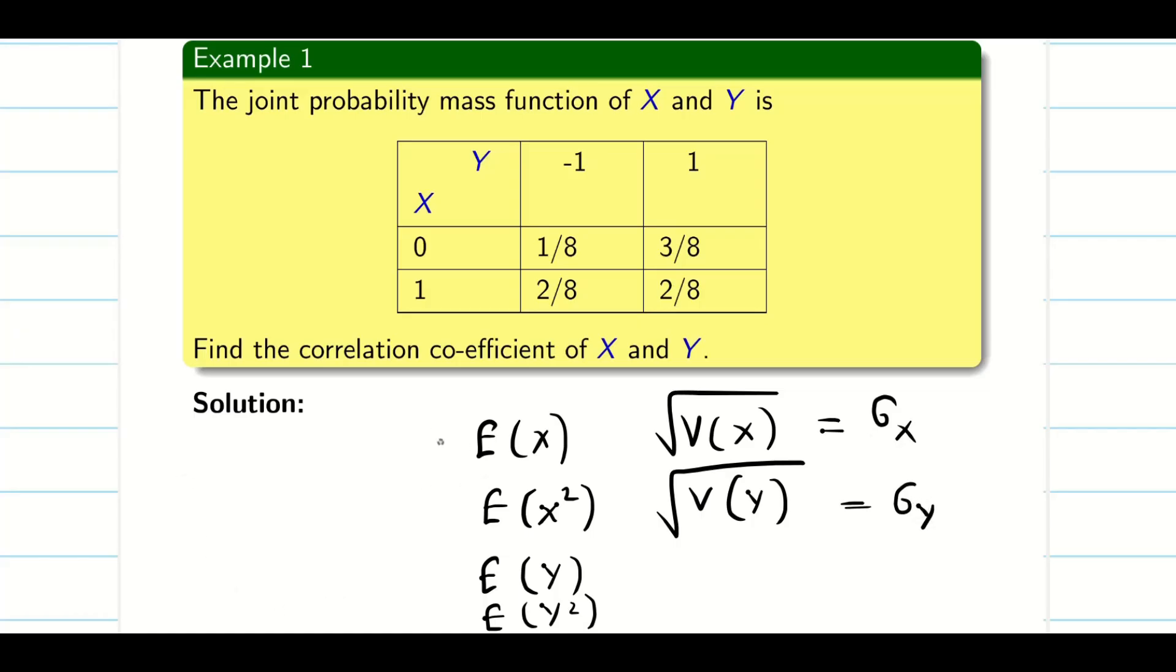For the covariance, we need E of X and E of Y. Similarly, the new thing we are going to find is E of XY.